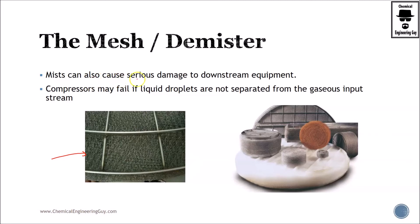Mist can also cause serious damage to downstream equipment. This little mist can affect the state before rust and so on. Compressors may fail if liquid droplets are not separated from the gaseous input—that's an obvious one.